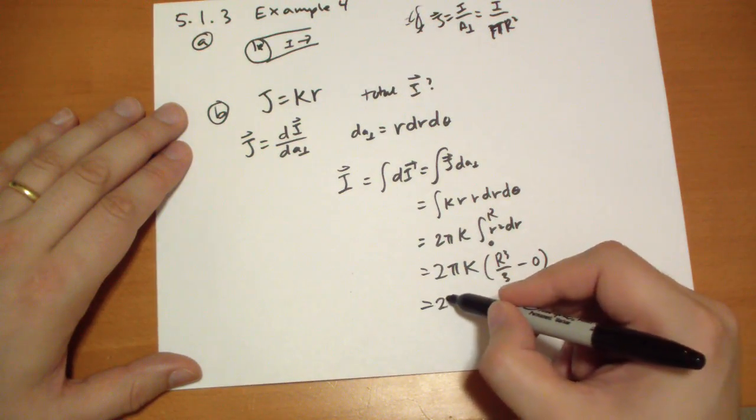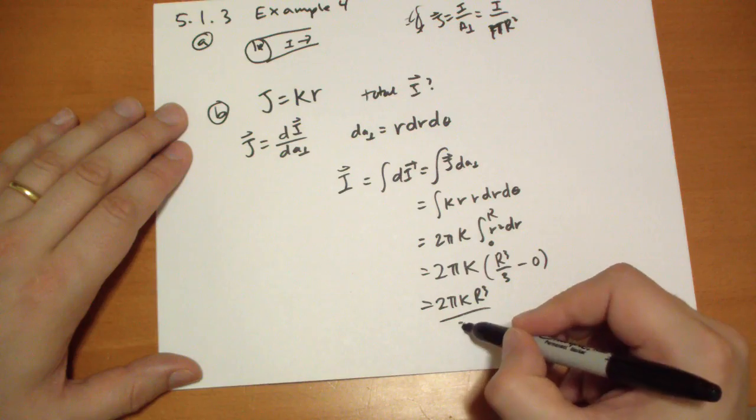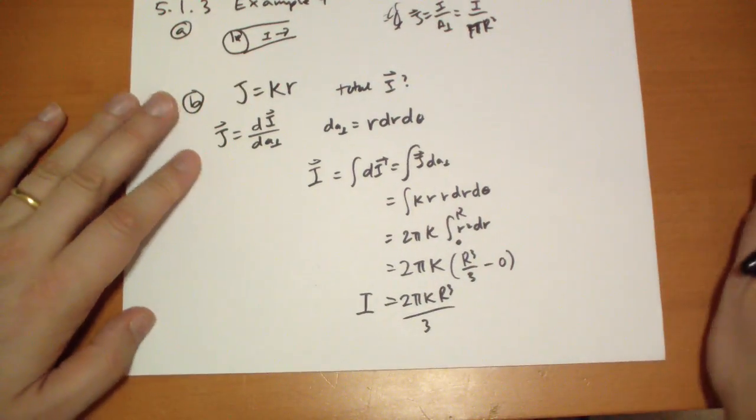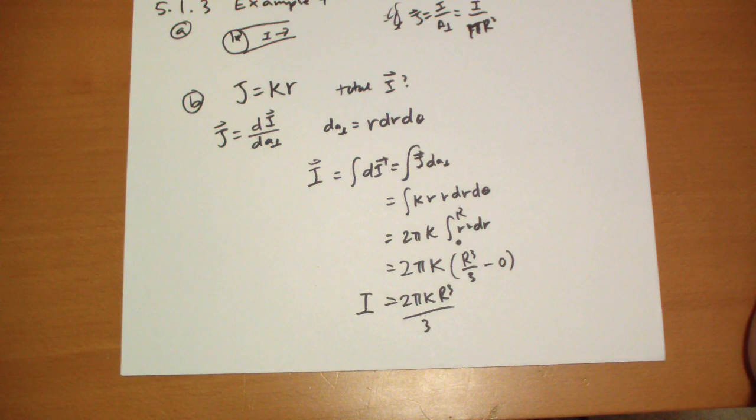so we get 2πKR³ all over 3. That's the total current flowing through that wire. That was kind of easy.